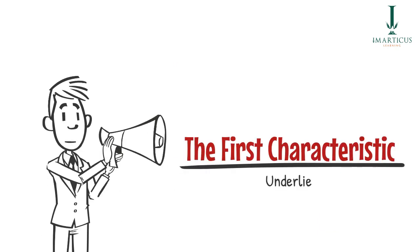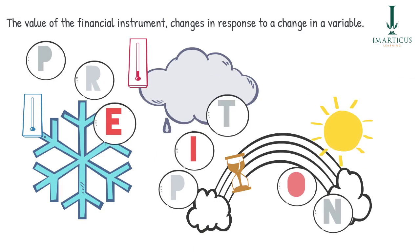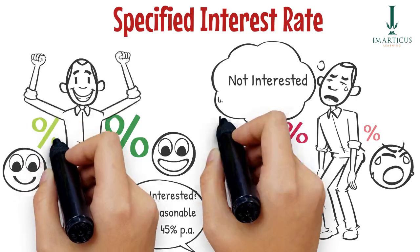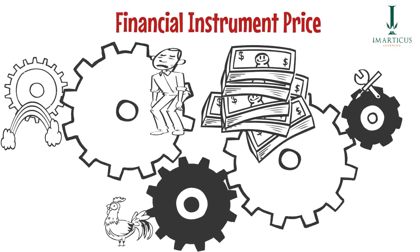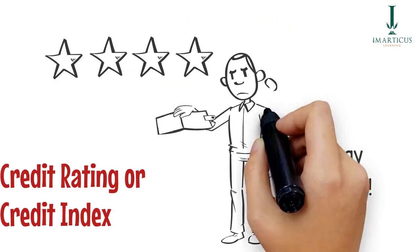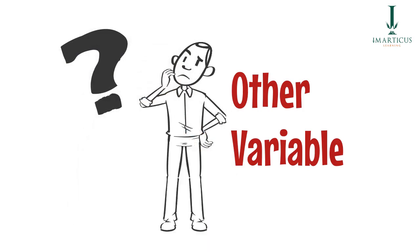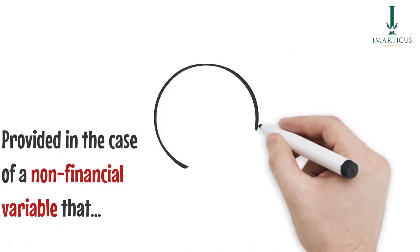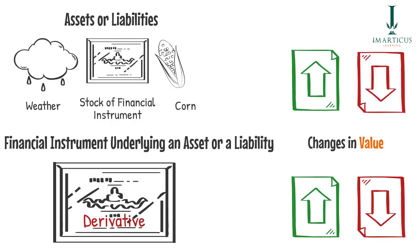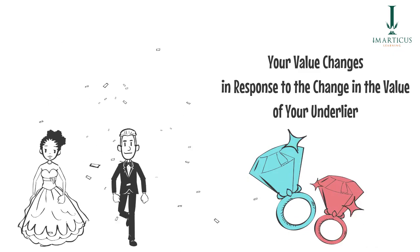The first characteristic: the value of the financial instrument changes in response to a change in a variable. These variables include specified interest rate, financial instrument price, commodity price, foreign exchange rate, index of prices or items, credit rating or credit index, or other variable — provided, in the case of a non-financial variable, that the variable is not specific to a party to the contract. So, once a financial instrument underlies an asset or a liability, the value of this financial instrument — that derives its value from the asset or the liability — changes in response to the change in this asset or liability.